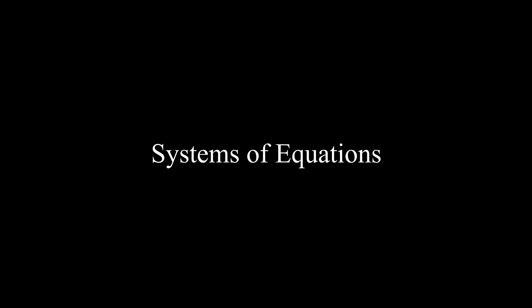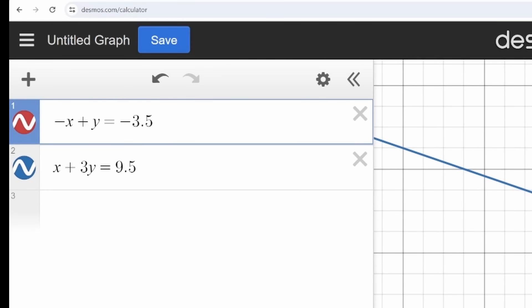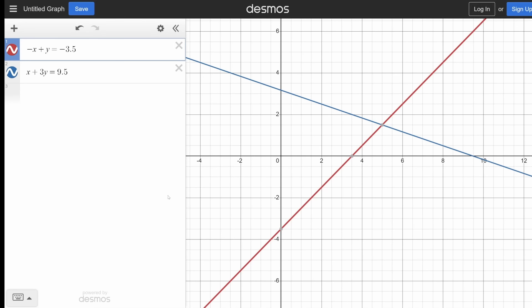Systems of equations. You're never going to guess what you do for these. Plug them into Desmos, that's right baby, we're going to Harvard. Now, if you want to get technical, you can think of the red line as every single point that satisfies the first equation, and the blue line as every single point that satisfies the second equation. So the point of intersection is the only point that satisfies both equations.